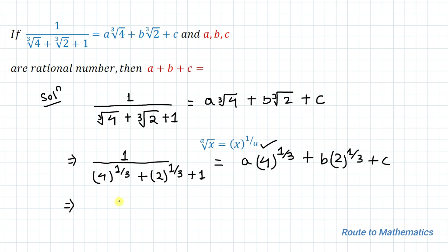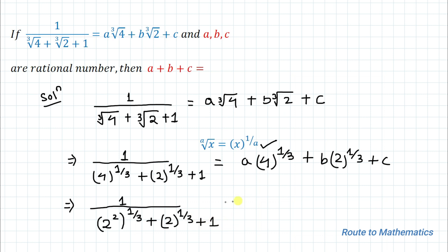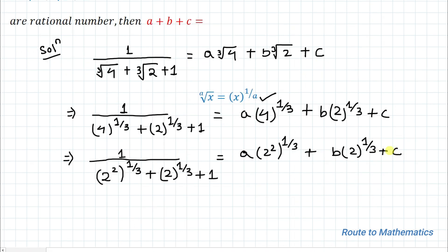Next, we can write 4 to the power 1 by 3 as (2 squared) to the power 1 by 3, while 2 to the power 1 by 3 remains the same, plus 1. The right hand side becomes a multiplied with (2²) to the power 1 by 3 plus b multiplied with 2 to the power 1 by 3 plus c. If there are brackets between the powers, we can multiply the powers.